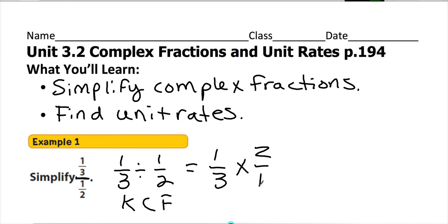There's nothing to reduce because everything is either 1 or prime, so we just multiply. 1 times 2 is 2, and 3 times 1 is 3, so the answer is 2 thirds. We've done these before — it looks complicated but we're really just seeing familiar math in a new way.